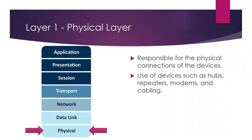Despite the name 'Physical,' this layer isn't limited to physical cables. Wi-Fi signals, radio signals, and Bluetooth all sit at layer one — anything used to transport data from one system to another operates at this layer.